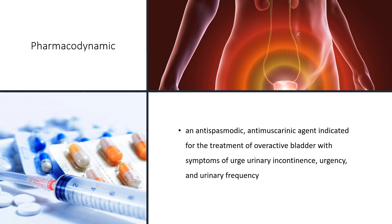Pharmacodynamic. Trospium is an antispasmodic, antimuscarinic agent indicated for the treatment of overactive bladder with symptoms of urge urinary incontinence, urgency, and urinary frequency. According to receptor assays, it displays higher affinity towards muscarinic receptors compared to nicotinic receptors at therapeutic concentrations.